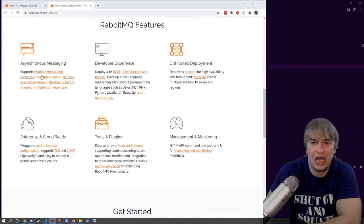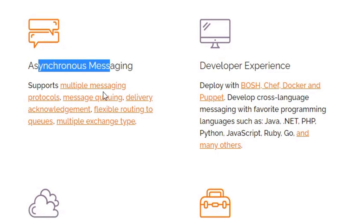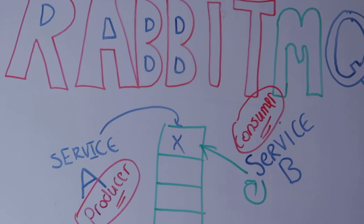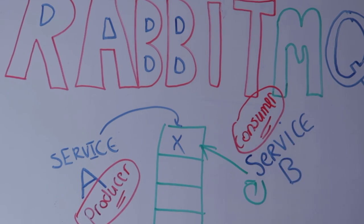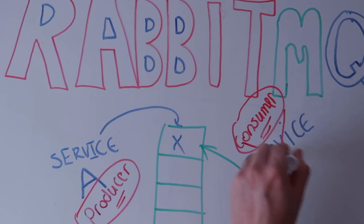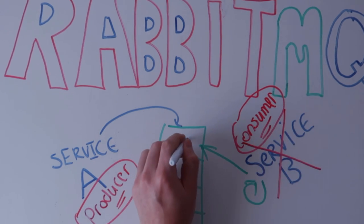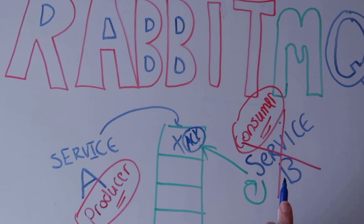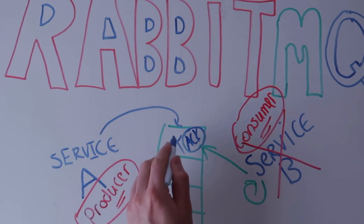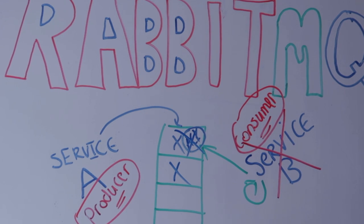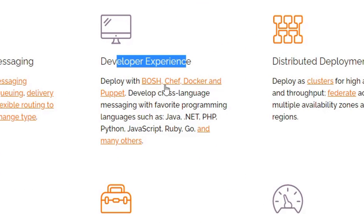RabbitMQ is the most widely used open source message broker and has all of these features. It also provides delivery acknowledgement — a special feature where if service A puts a message into the queue and service B picks it up but then crashes, RabbitMQ will expect an acknowledgement. If it doesn't receive one, RabbitMQ will automatically put that message back into the queue for another consumer to pick up, adding resilience. RabbitMQ also has great developer experience with many programming language compatibilities.